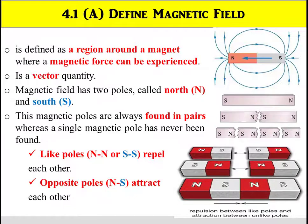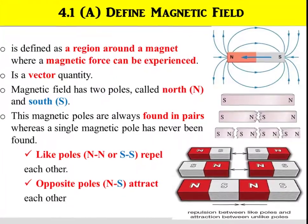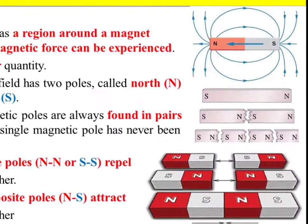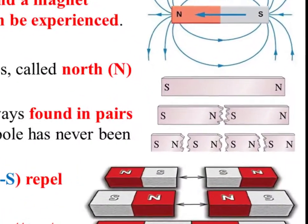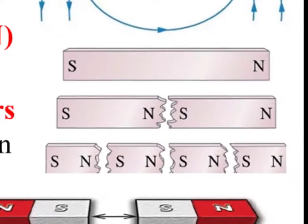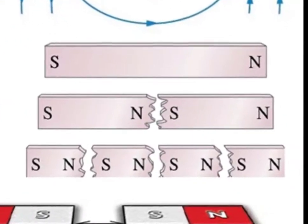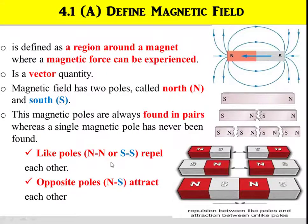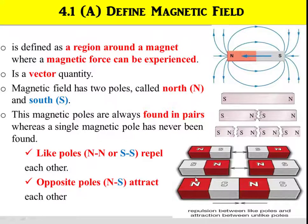As you can see here in this figure, if we break down a permanent magnet, it will produce another pair of poles. Like poles, for example North and North, or South and South, repel each other. Whereas for the opposite poles, for example North to South, will attract each other.